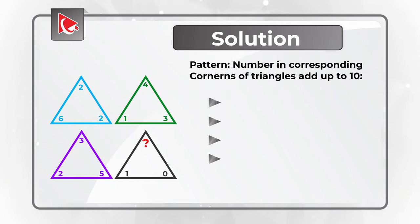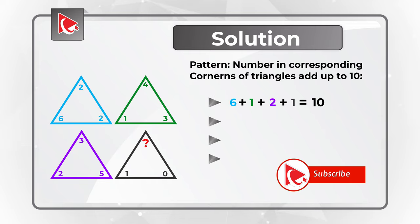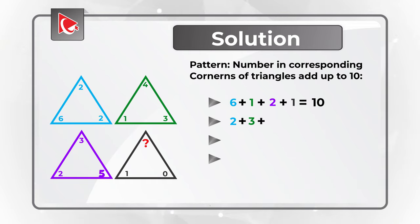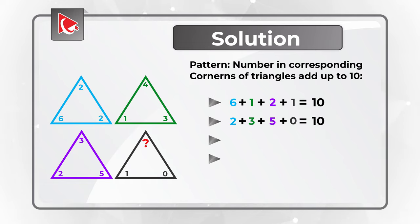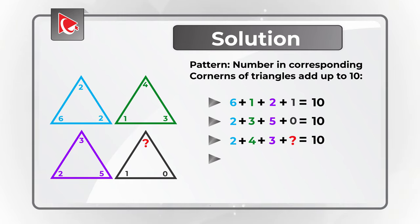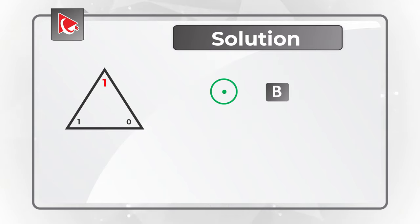Let's do the math starting with the bottom left corner: 6 plus 1 plus 2 plus 1 equals 10. Bottom right corner: 2 plus 3 plus 5 plus 0 is also 10. Now calculate the missing number: 2 plus 4 plus 3 plus question mark equals 10, so the question mark equals 1. The correct choice is choice B, 1.